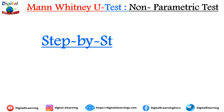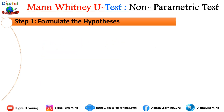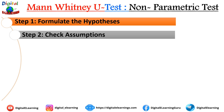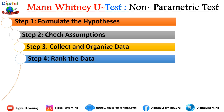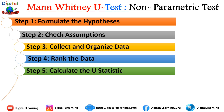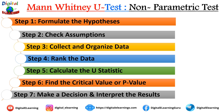Now let's look at the step-by-step guide for performing the Mann-Whitney U test. Step 1: formulate the hypothesis. Step 2: check all relevant assumptions. Step 3: collect and organize the data. Step 4: rank the data. Step 5: calculate the U statistic. Step 6: find the critical value or p-value. Step 7: make a decision and interpret the result.